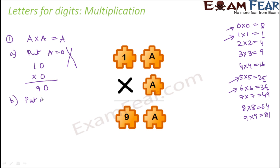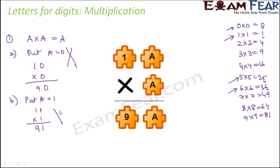The second option is a=1. In that case it would be 11×1. The result has to be 91, but 11×1 is 11, not 91. So this is also not the option.